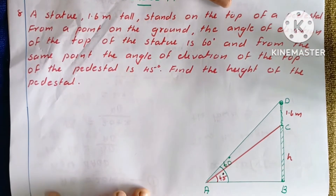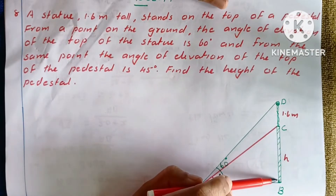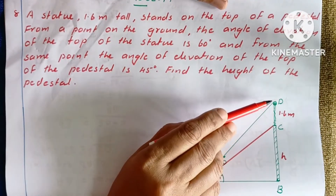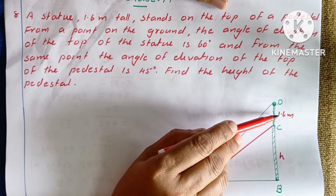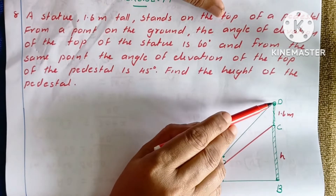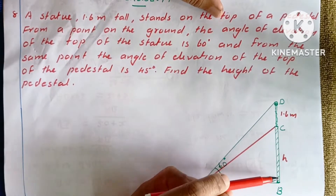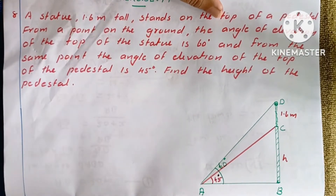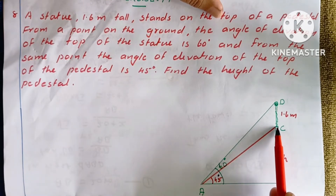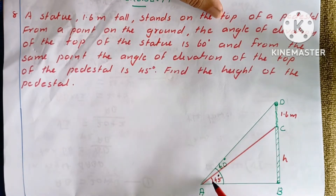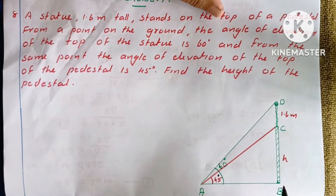This is our figure. This is our triangle ABC — the pedestal. This is our pedestal, and this is our statue. The statue height is 1.6 meters. The angle of elevation of the top of the pedestal is 45 degrees, and the angle of elevation of the top of the statue is 60 degrees.